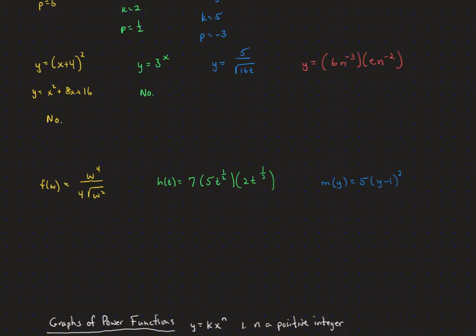Now we have to do a little more detective work. We're going to think of that as 5 in the numerator. The square root of 16t, we can pull apart as the square root of 16 times the square root of t. The square root of 16 is 4, and the square root of t is t to the half. We can pull that apart even more: that's 5 fourths times t to the negative one-half. So yes, it is in the form y equals kx to the p, with k equal to 5 fourths and p equal to negative one-half.